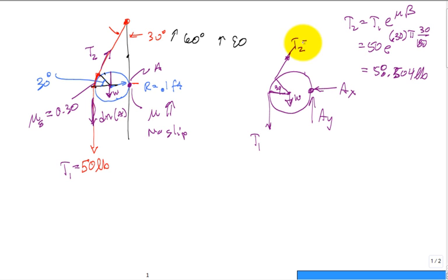We know this one, 58.504. We know this one, 50. We don't know Ax or Ay and we don't even care about them, do we? So what do you want to do to get the maximum W for equilibrium? Sum of the moments about A, and so when you do the sum of the moments about A, must be equal to zero.